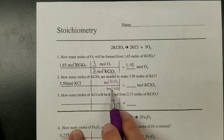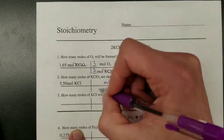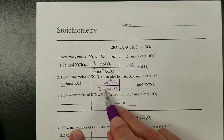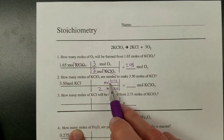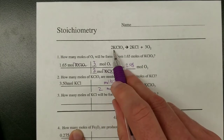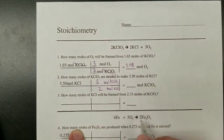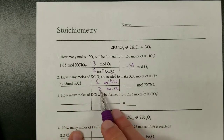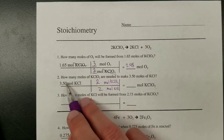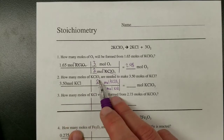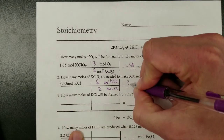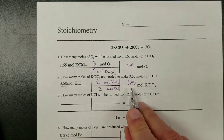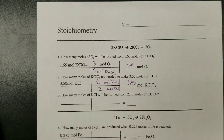We take these numbers right out of the balanced equation. The 2 is next to KCl, so it goes next to KCl. The number next to KClO₃ is also 2, so that goes in the denominator. So we take 3.50 times 2 divided by 2, which gives the exact same number. That's why the answer is that many moles produced from that many moles you started with.